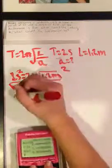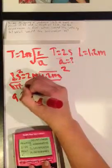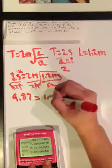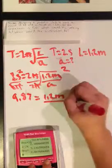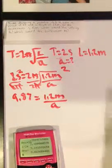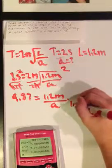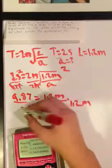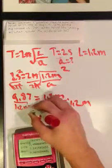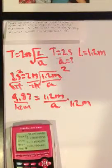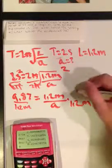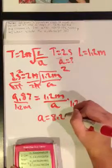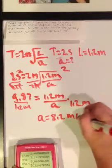This equals 9.87 equals 1.2 meters over acceleration. If we divide the 1.2 meters, then we get the acceleration to equal 8.2 meters per second squared.